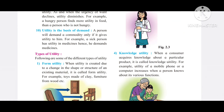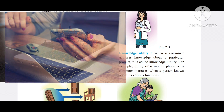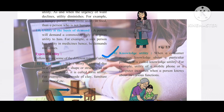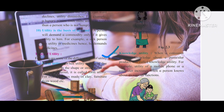Next is knowledge utility. When a consumer acquires knowledge about a particular product, it is called knowledge utility. For example, the utility of a mobile phone or computer increases when a person knows about its various functions.